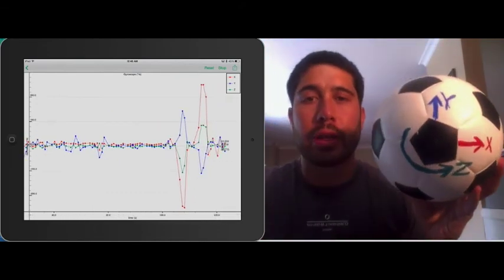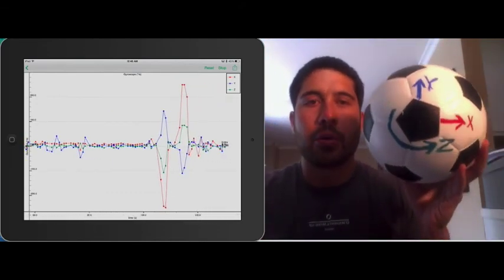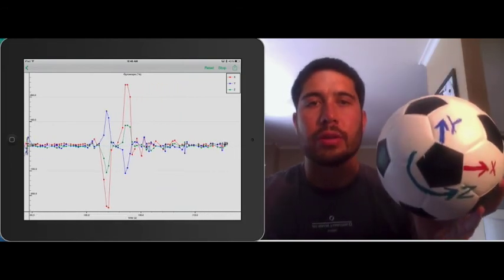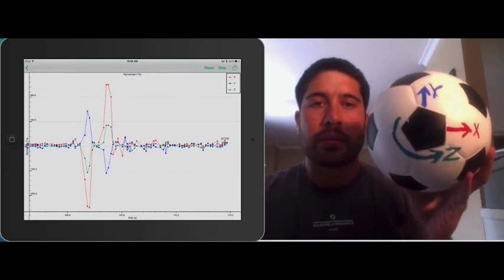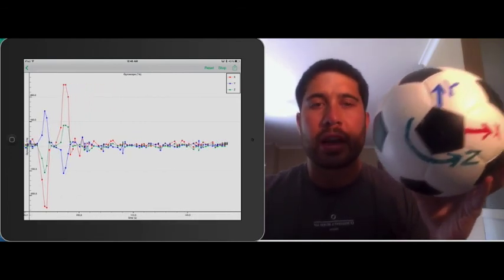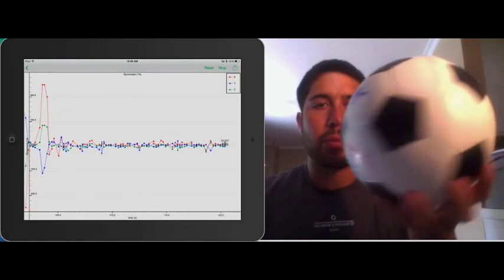So, using both the accelerometer and the gyroscope, we can understand how a soccer ball can move in three dimensions. So, fire up your PocketLab, and then watch the data as you move the ball around.